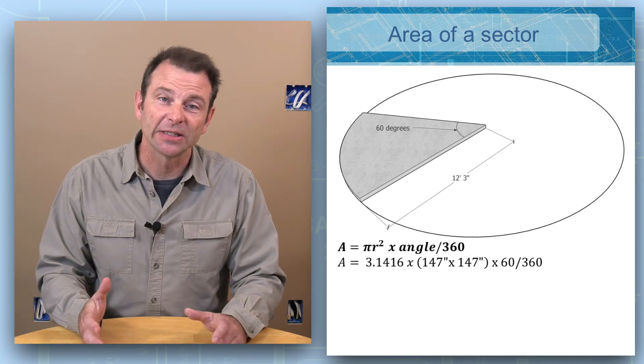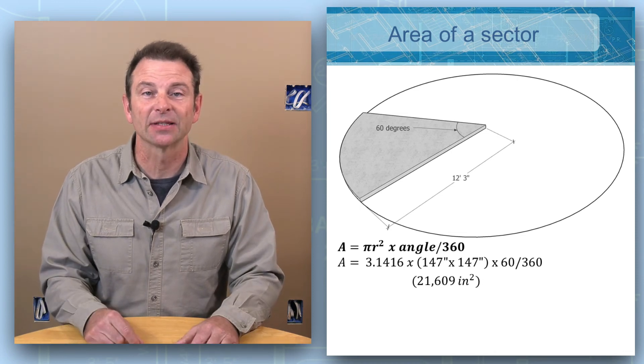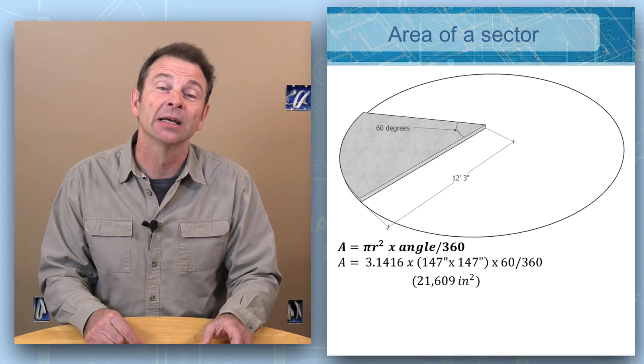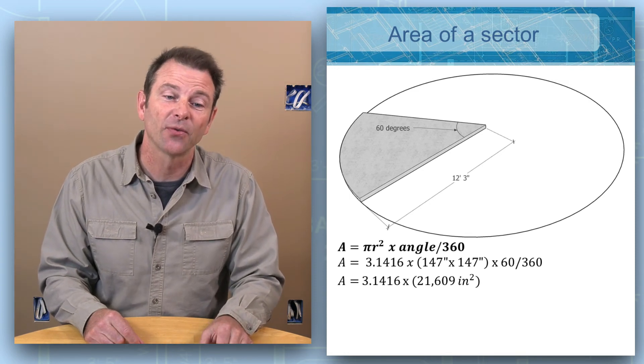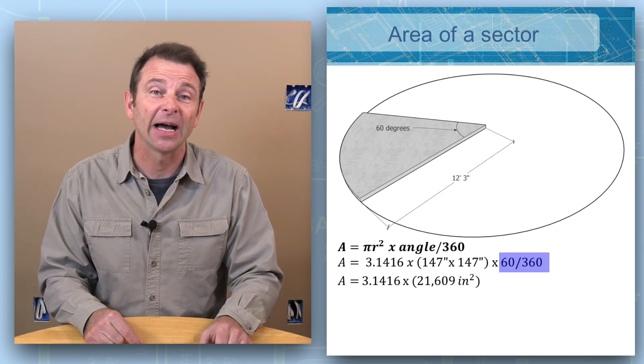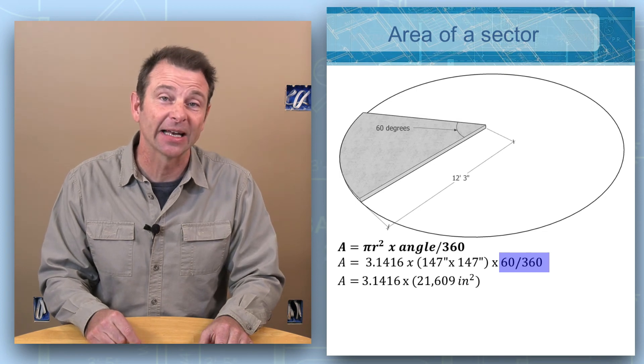When we square 147 inches, that's multiplying it times itself. You'll arrive at 21,609 square inches. So we're going to multiply pi, which is 3.1416, times 21,609 square inches by our 60 over 360.